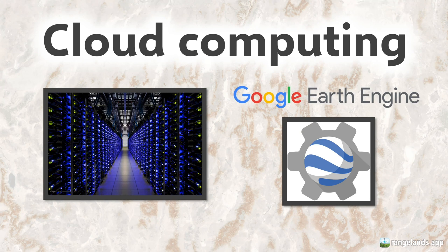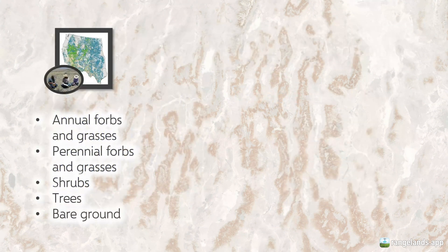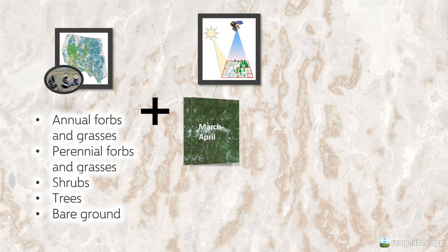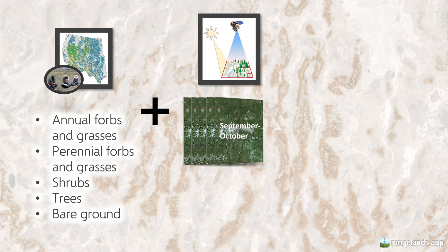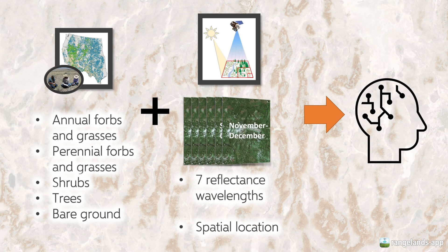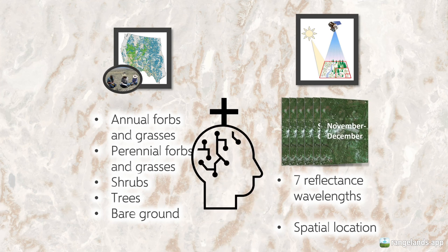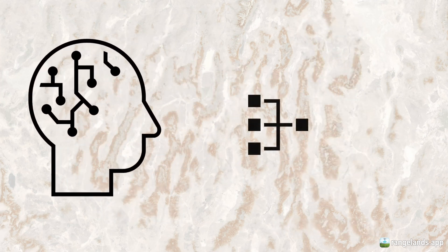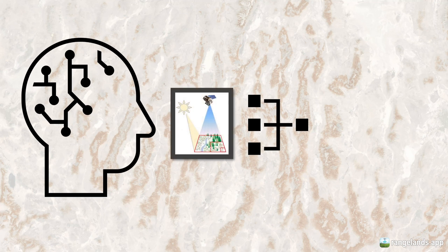Now that we have some understanding of the types of data going into the vegetation cover dataset, how do we produce it? From the field data, we take observations of our vegetation classes of interest for each plot. For the satellite data, we take images from six different times of the year that relate to different phenological patterns, so we can see how plants look throughout the year. Landsat also measures seven different types of reflectance, and we include spatial location variables because we know how much rangelands vary across the western U.S. We take all of this data and use a machine learning algorithm, which finds patterns between the vegetation data on the ground and the satellite data, producing a model that makes those relationships explicit.